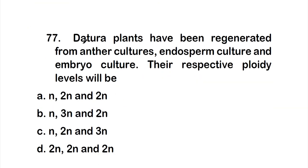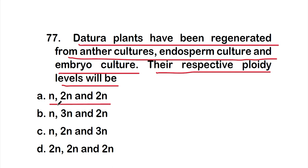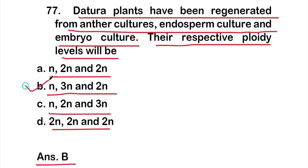Question 77: Datura plants have been regenerated from anther culture, endosperm culture, and embryo culture. Their respective ploidy levels will be — Option A: n, 2n, 2n; Option B: n, 3n, 2n; Option C: n, 2n, 3n; Option D: 2n, 2n, 2n. The right answer is Option B — n, 3n, and 2n respectively.